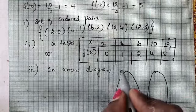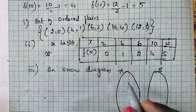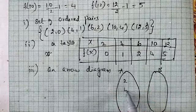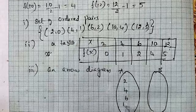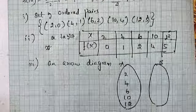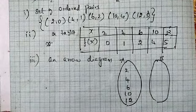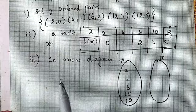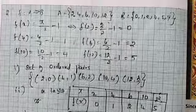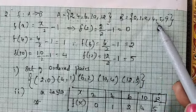A and B, f is a function. Set A: 2, 4, 6, 10, 12. Set B: 0, 1, 2, 4, 5, 9.